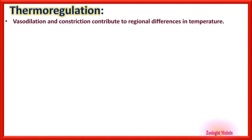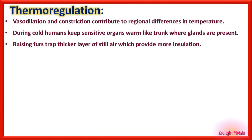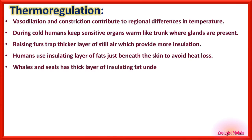Vasodilation and vasoconstriction contribute to regional differences in temperature — in winter, hands and arms become cold while the neck and internal body parts remain warm. During cold, humans keep sensitive organs warm, such as the trunk where glands are present. Raising hairs trap a thicker layer of still air, providing more insulation. Humans use an insulating layer of fat beneath the skin to avoid heat loss.